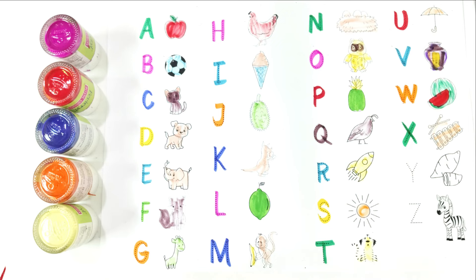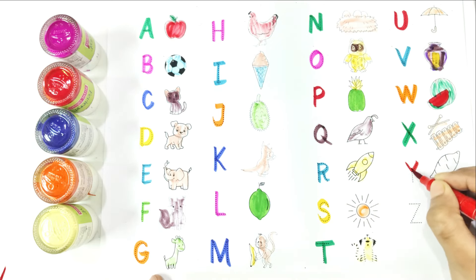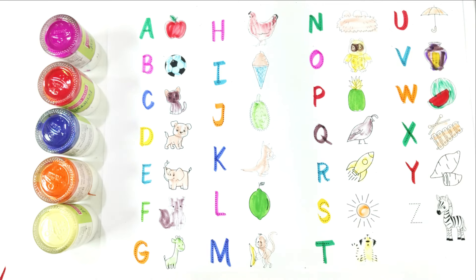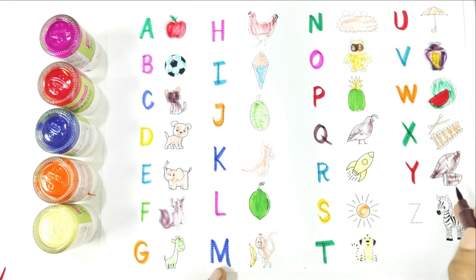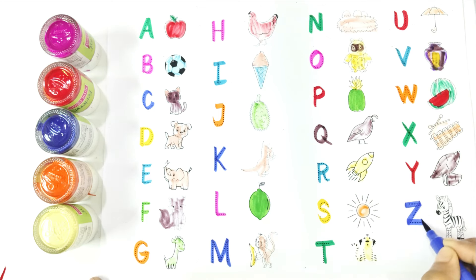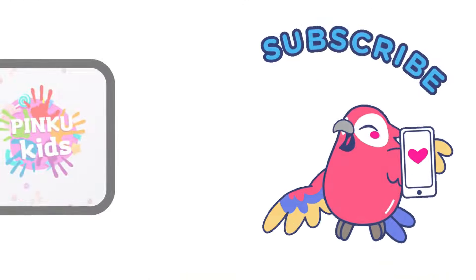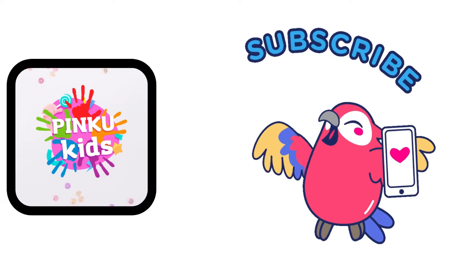Write with me. Y — Y is for yam. Again, say with me: Y is for yam. Write with me. Z — Z is for zebra. Again, say with me: Z is for zebra. Subscribe for more videos!